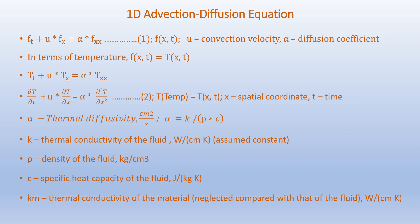The 1D advection diffusion equation is given as F_t plus u times F_x equals alpha F_xx, where F is a dependent variable that can represent temperature or concentration. Here u is the convection velocity and alpha is the diffusion coefficient. If we consider the dependent variable F as temperature, we get: dou T over dou t plus u times dou T over dou x equals alpha times dou squared T over dou x squared. Here uppercase T represents temperature as a function of x and time. Alpha is the thermal diffusivity equal to K over rho C, which represents the thermal diffusivity of the fluid.